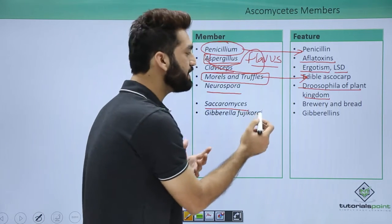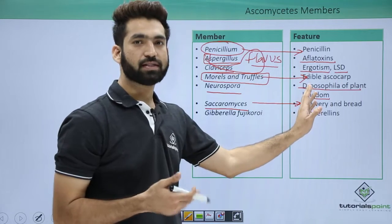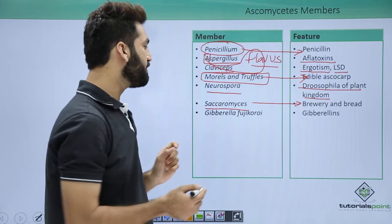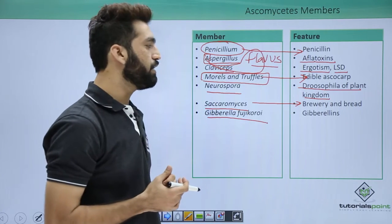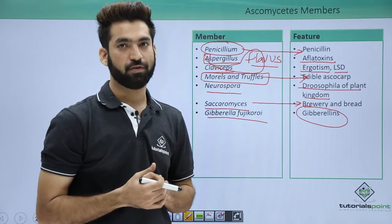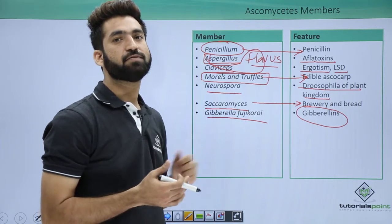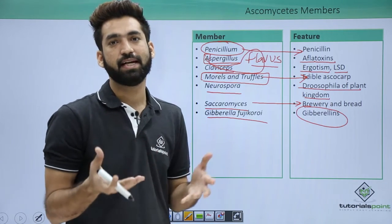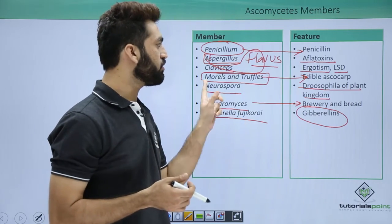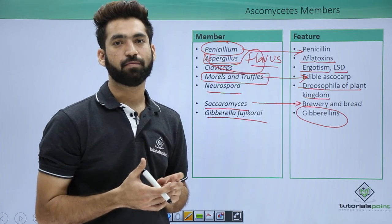Saccharomyces cerevisiae is the brewery or bread fungus used for wine, beer, and bread production. There is another fungus called Gibberella fujikuroi which produces gibberellins. Gibberellins are a plant growth hormone. This fungus was found in Japan when farmers observed seedlings showing abnormal growth. Remember all these members and their features. The next session will start with another class of fungi: Basidiomycetes.